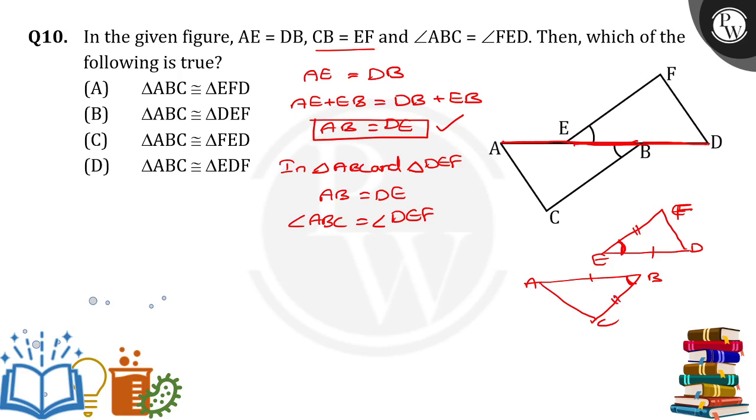CB is equal to EF. So CB can be written as BC also. BC is equal to EF. So from SAS congruency, triangle ABC is congruent to triangle DEF. So option B is the correct answer. Thank you.